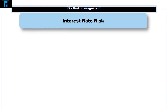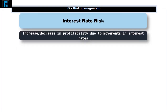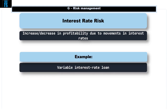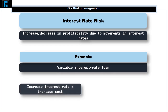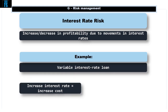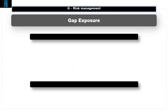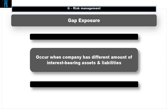Interest rate risk is an increase or decrease in our profitability due to movements in interest rates. A simple example is a company with a variable rate loan — if that variable rate increases, interest payments will increase; if the variable rate falls, interest costs will fall. Gap exposure occurs if the company has a different amount of interest-bearing assets and liabilities. The net exposure will generate an impact on profit when interest rates move.